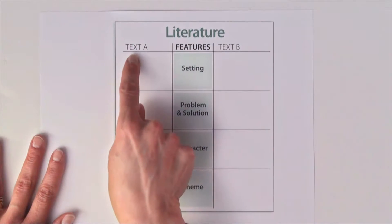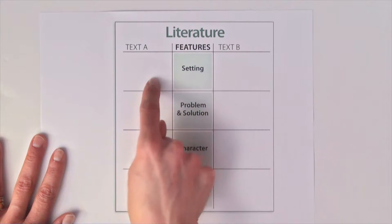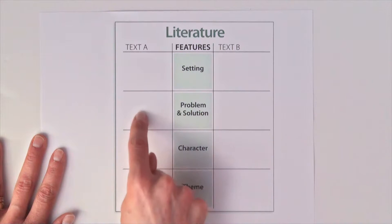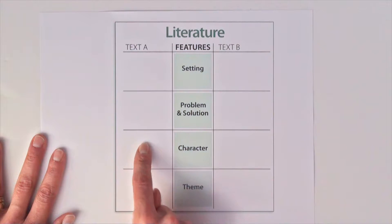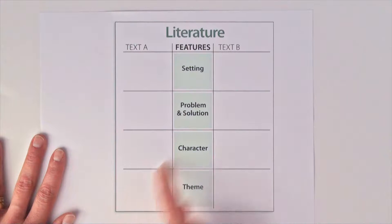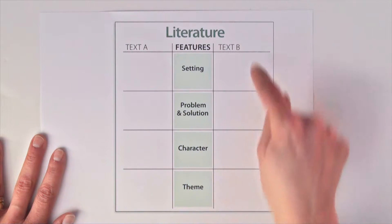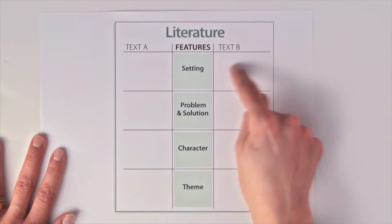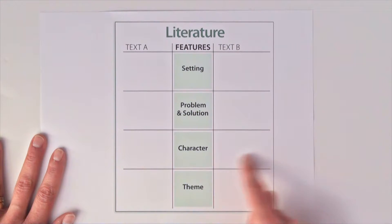Students will read Text A, making specific notes of its setting, the problem and solution, character details, and even the theme and author message. Then using those same facets of comparison, they read Text B, making specific notes of its details.